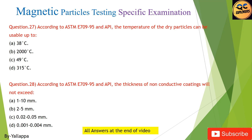Question 28: According to ASTM E709-95 and API, the thickness of non-conductive coatings will not exceed: (A) 1 to 10 mm; (B) 2 to 5 mm; (C) 0.02 to 0.05 mm; (D) 0.001 to 0.004 mm.